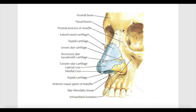Bones are located superiorly and cartilages are located inferiorly in the formation of the external nose. The bones are the two nasal bones, the frontal process of the maxilla on each side, and sometimes an inferior part of the frontal bone also helps in the formation of the bony part of the external nose.